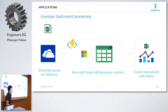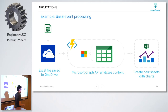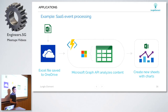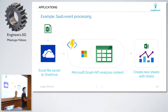A SaaS event example - you can use services like OneDrive or Dropbox, pull information from Dropbox, select a particular file like an Excel sheet, analyze the content using Microsoft Graph Analyzer, and then create a new sheet with charts and graphs. Azure Function is event-based - once there's an event coming in, it triggers Azure Function, and Azure Function sends that out as an output.